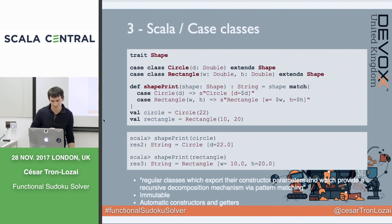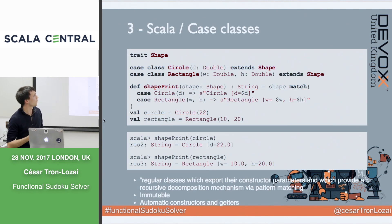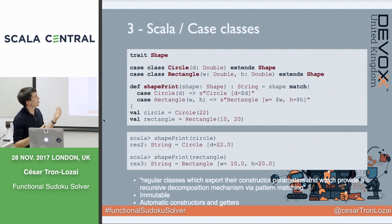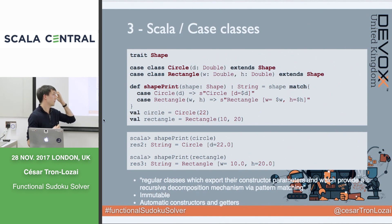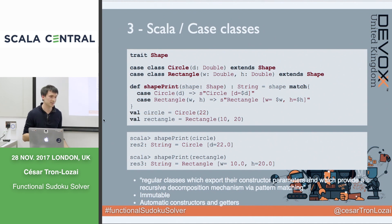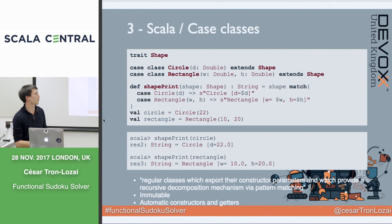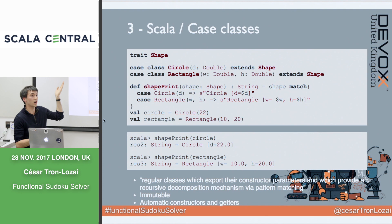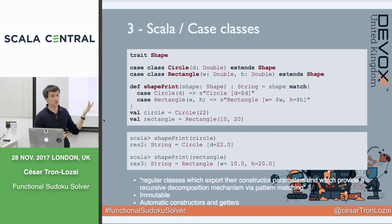Introduction to Scala features: the first thing is a trait. For Java people it's a bit like an interface. Here I have an example with a shape and I define two case classes as implementations of my trait. Compared to Java, I don't have to write any getters or constructors — everything is done for me. It's an immutable data structure. A circle has one parameter, diameter, and a rectangle has two parameters, and then I can use pattern matching on that trait.